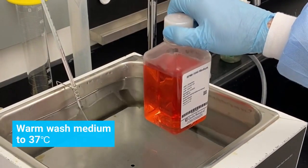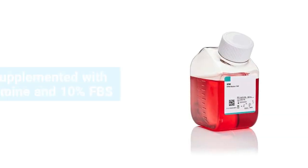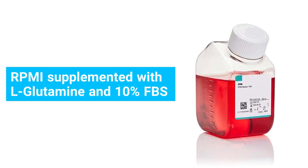Begin by warming your wash medium to 37 degrees Celsius. We recommend using RPMI with L-glutamine and 10% FBS.